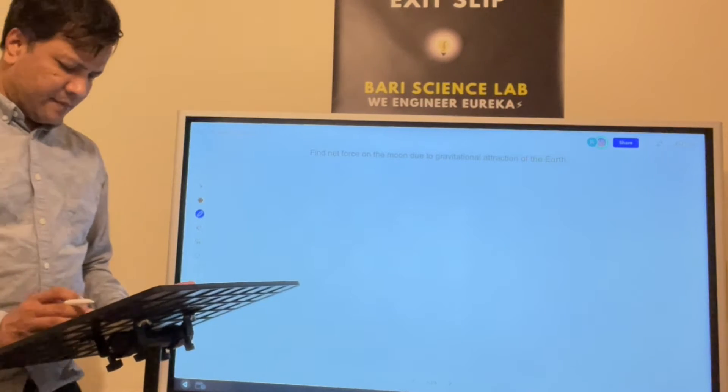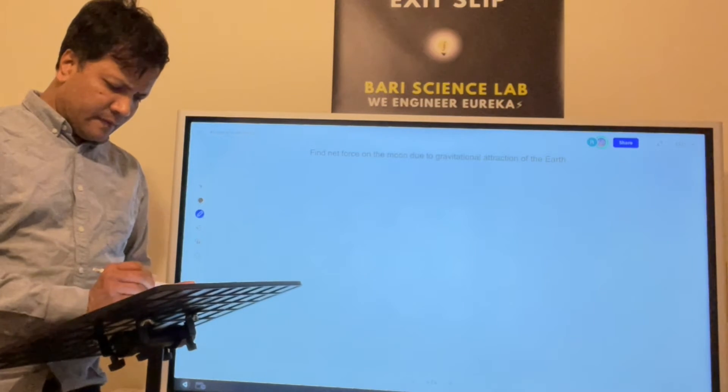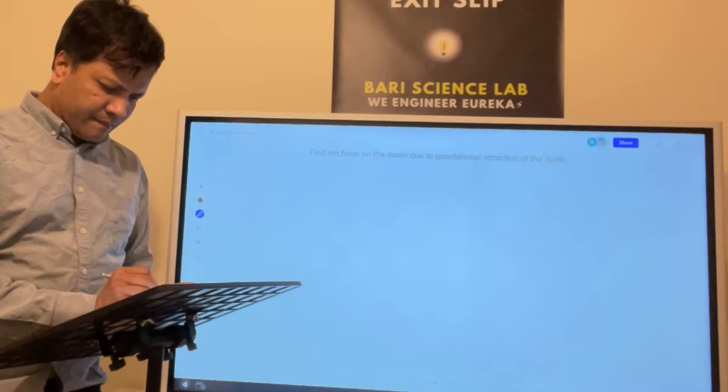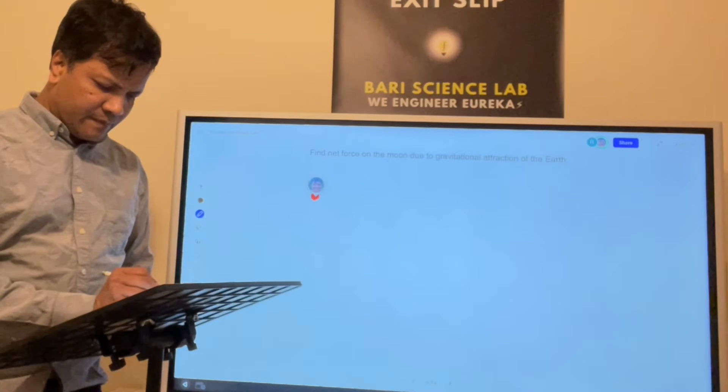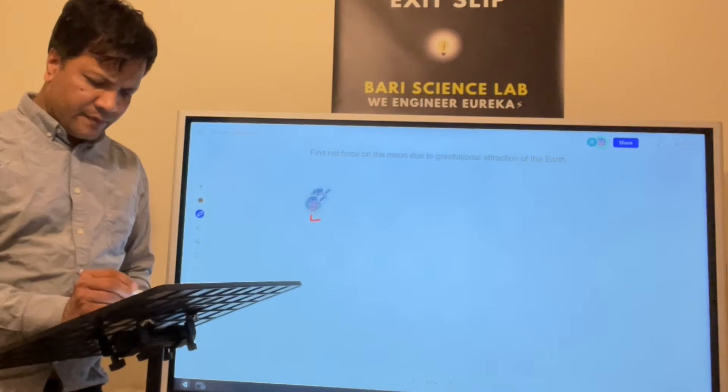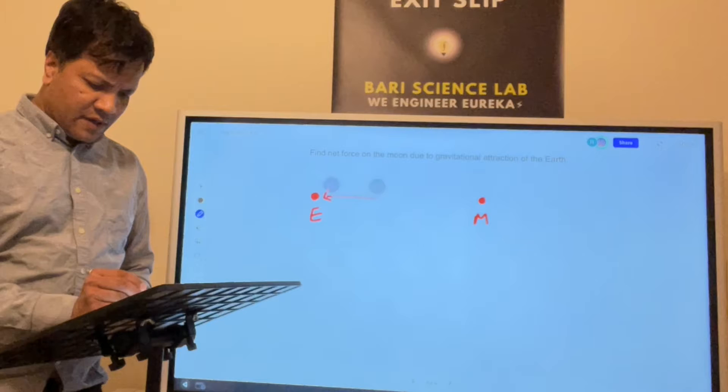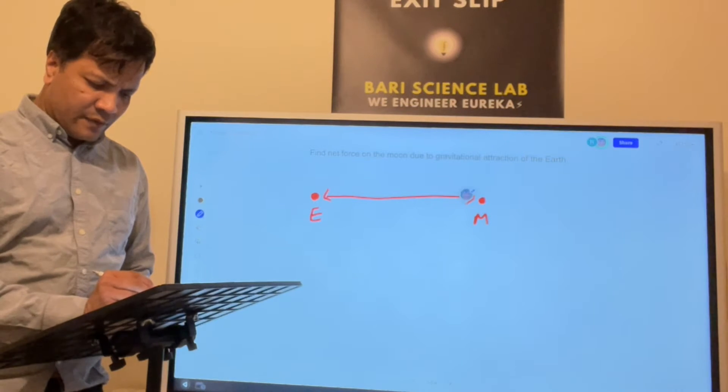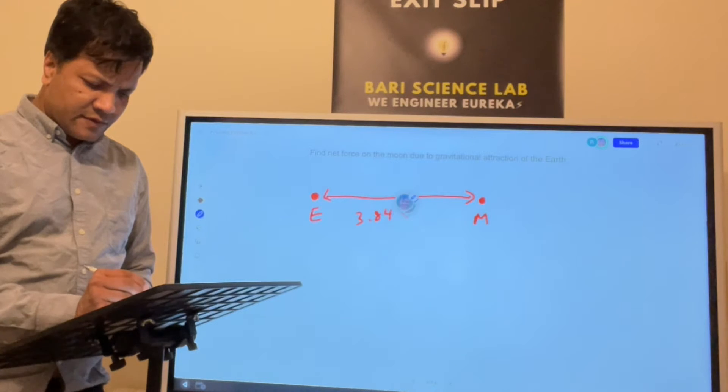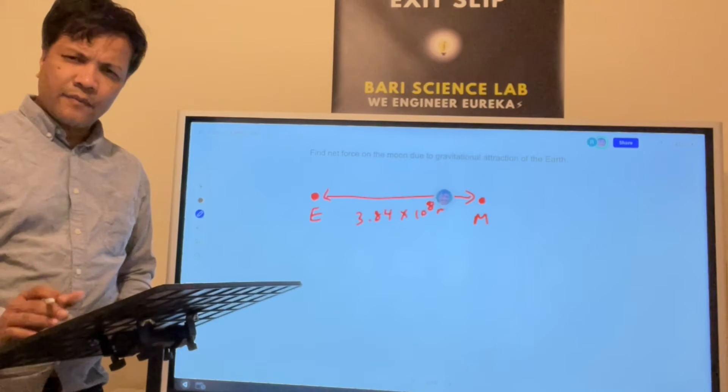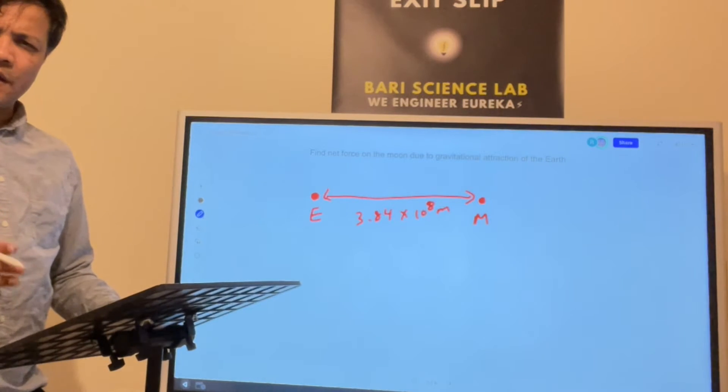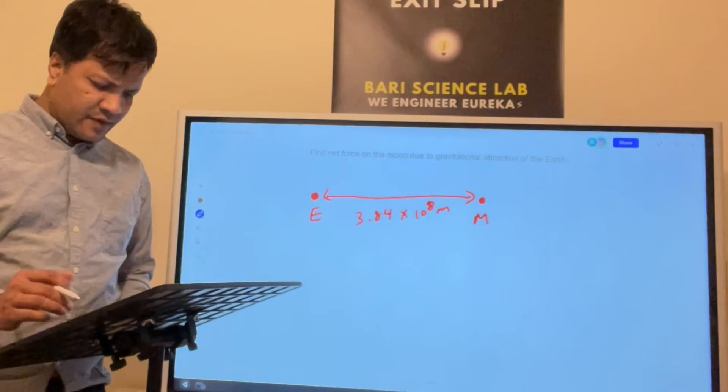I'm going to explain that exactly. We want to find the force between the earth and the moon. The distance between earth and moon is 3.84 times 10 raised to 8 meters. We're going to use Newton's universal law of gravity to find this.